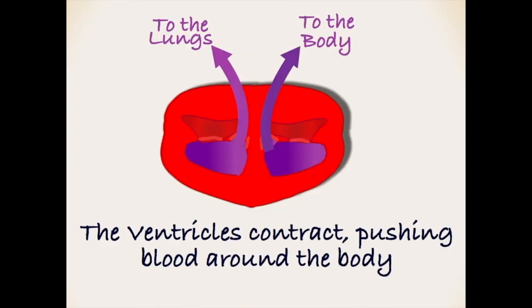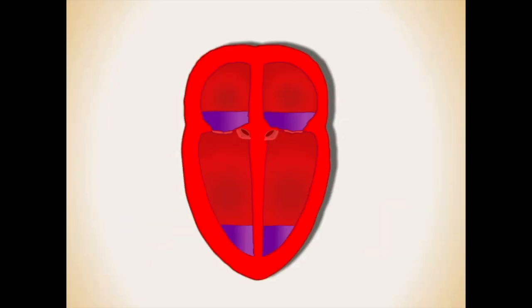Now the ventricles contract: the left ventricle pushing the oxygen saturated blood out towards the body's organs, the right side pushing the deoxygenated blood back towards the lungs. The heart then relaxes and the process repeats.